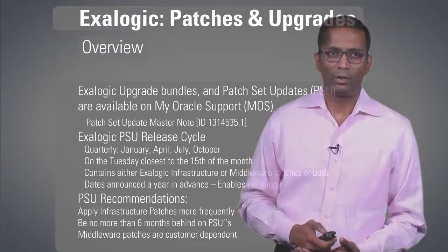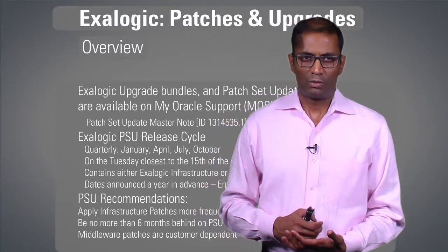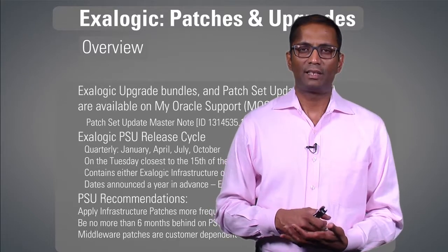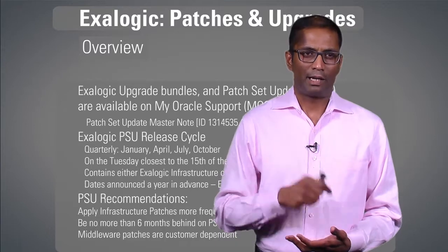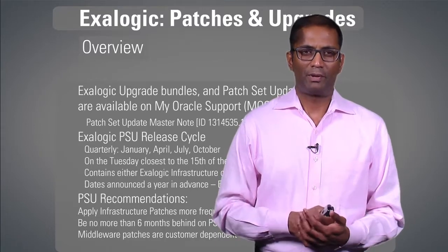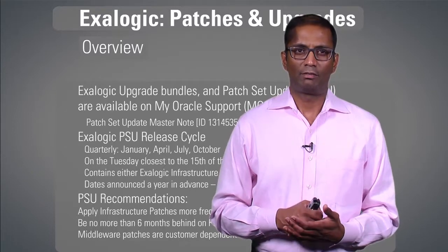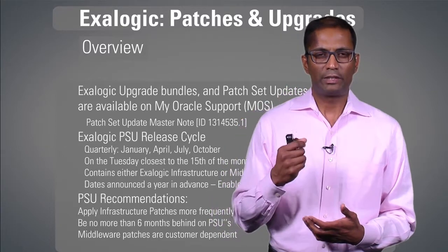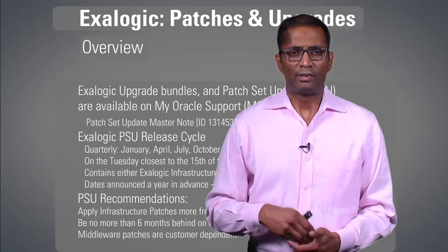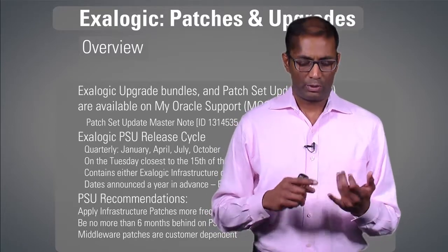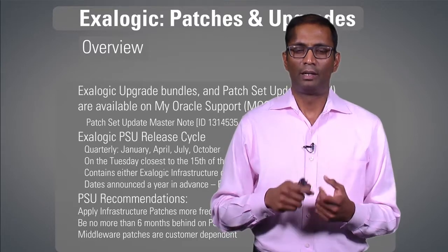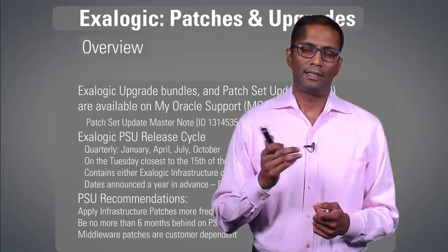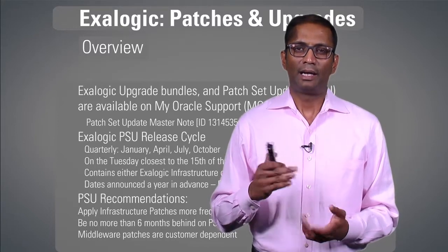Let's look at an overview of Exilogic patching. This slide talks about the release cycle for the PSU — patch set updates — which are available through My Oracle Support. There's a patch set update master note; you should memorize this number: 1314535.1. This master note has all the details of all the PSUs. The release cycle for Exilogic PSUs is every quarter — January, April, July, October. The patch set ships on the Tuesday closest to the 15th of the month, and it contains both Exilogic infrastructure as well as middleware.